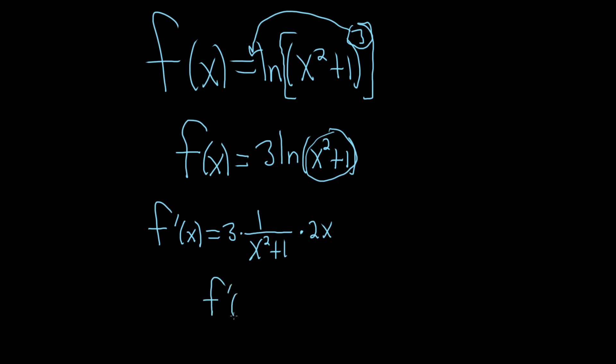The last thing to do maybe is just multiply these numbers. We have 3 times 1 times 2x, so 3 times 2 is 6. This is really just 6x over x squared plus 1, and that would be the final answer. I hope this video has been helpful, good luck.